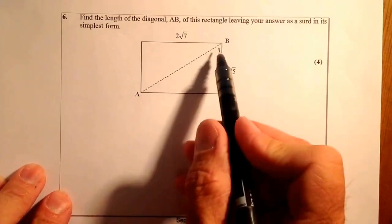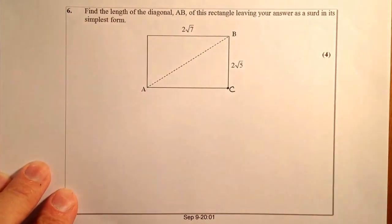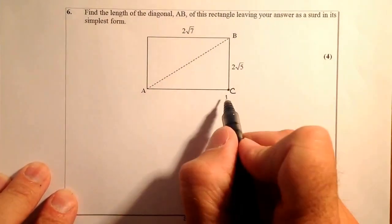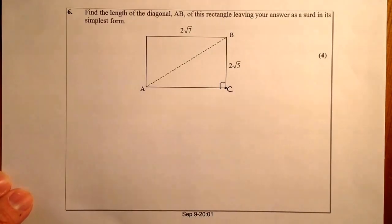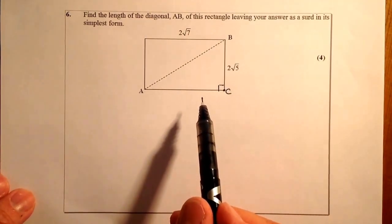Right, so what I've got is AB there. I'm going to put in a point C for that one there. It's a rectangle, so I know that's a right-angled triangle. And this type of question here lends itself to working with Pythagoras Theorem.